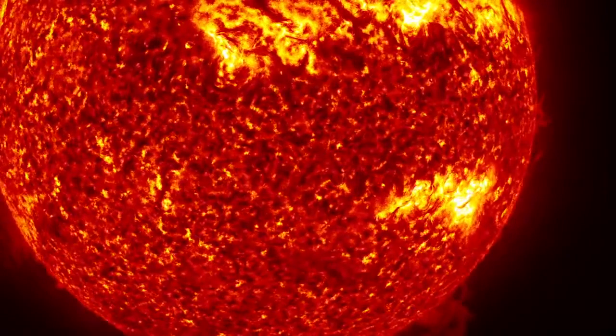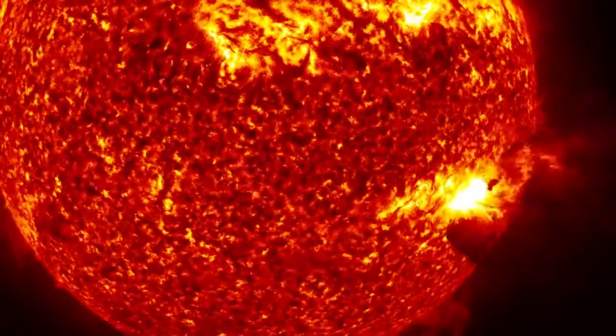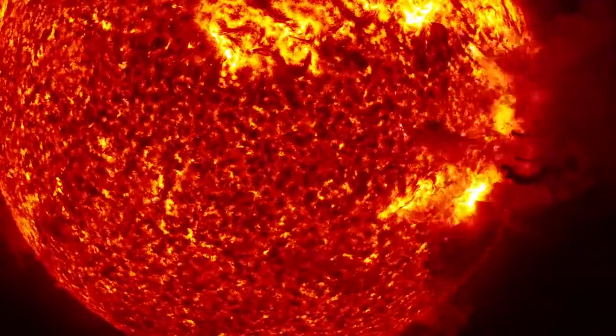When a large solar eruption occurs, there are generally three things that happen. Each of these takes a different amount of time to reach the Earth. The solar flare, because it's light, travels at the speed of light and takes approximately eight minutes to reach us. The solar energetic particles are traveling extremely fast, close to the speed of light, but not exactly the speed of light, so they take roughly 20 to 30 minutes to reach us. The coronal mass ejection is much slower and that takes about one to four days to reach us.